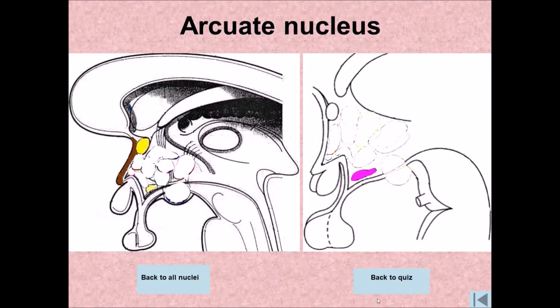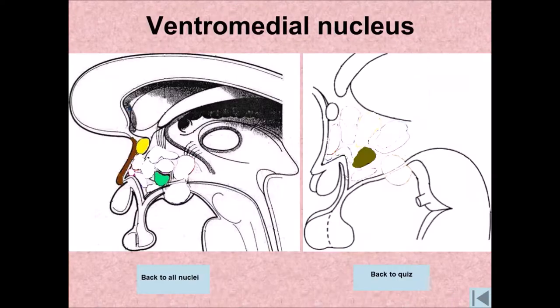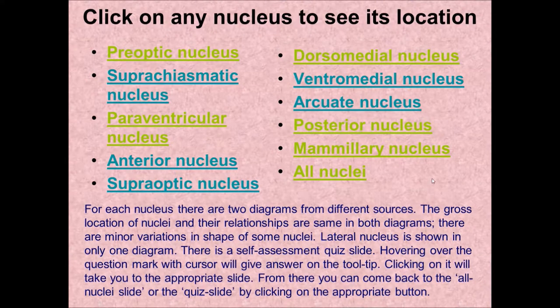While he's doing that, let's say he wants to do a self-assessment quiz, so he clicks on that. It takes him into the quiz, and while he's trying to identify all the nuclei, he cannot figure out what one of them is. He clicks on it and it tells him that it's the ventromedial nucleus. So this student can go back and forth in multiple different ways and see all the nuclei.